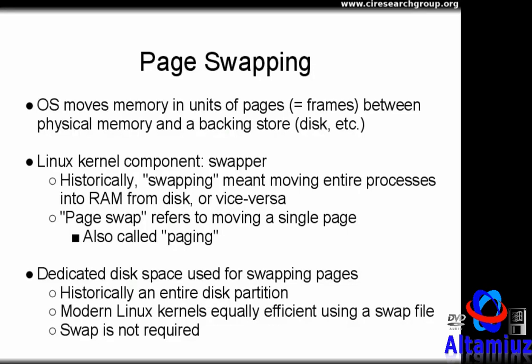A single movement of a single page frame into or out of physical memory is called a page swap. Historically, Linux machines used a dedicated hard disk partition to store the pages that were swapped out to disk. Modern versions of Linux are just as efficient using a swap file, which is a regular file stored alongside other data in the file system.